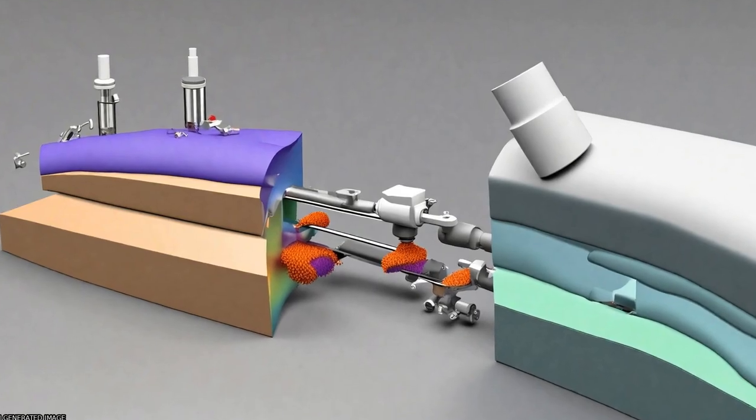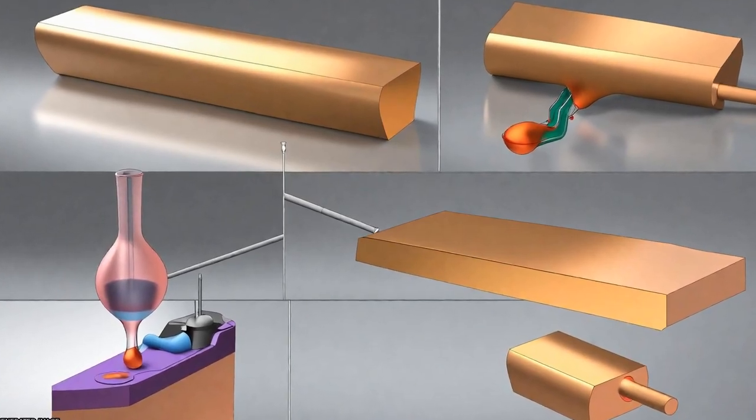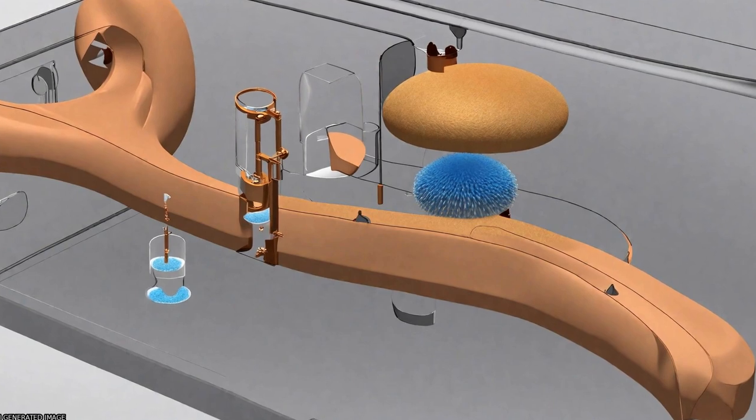The trihybrid nanofluid flow across a Riga wedge in the context of boundary slip involves three types of nanomaterials.